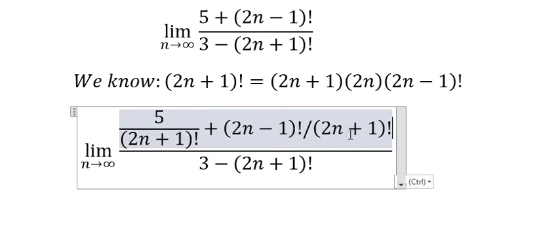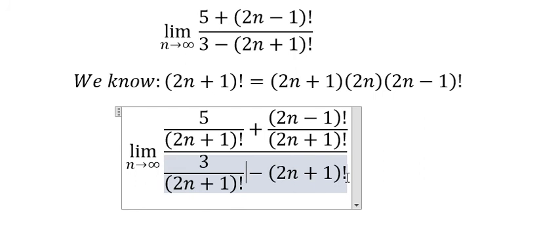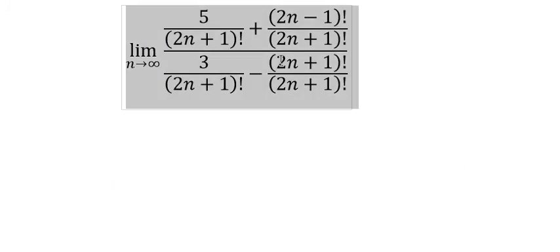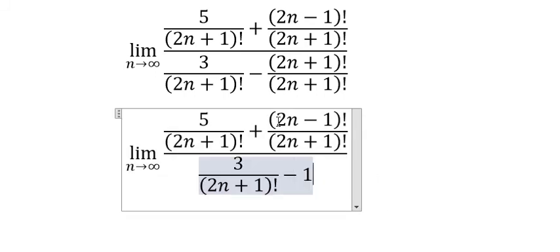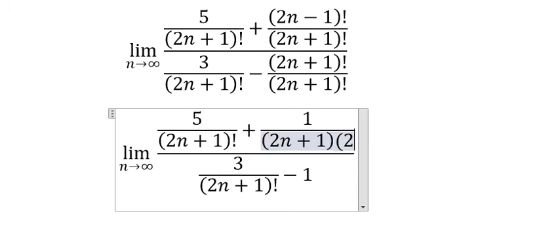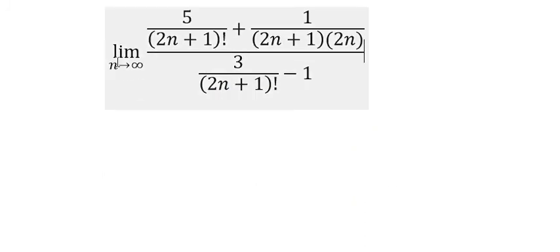This one too. Now we need to simplify. (2n+1)! divided by (2n+1)! equals 1. And (2n-1)! divided by (2n+1)! gives us 1 over (2n+1) multiplied by 2n. Now we can evaluate the limit.